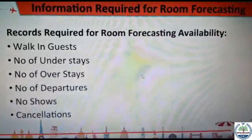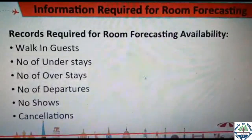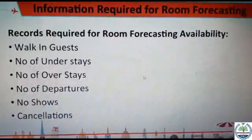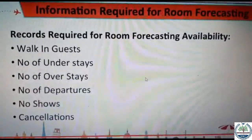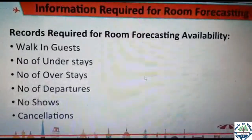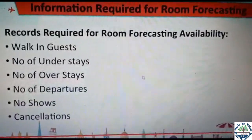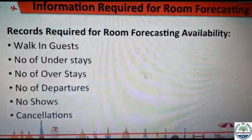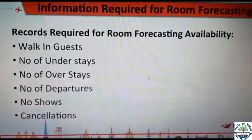Number of understays: suppose my reservation is for two days but I stay only for one day and cancel my reservation for the other day. Although I have already paid, my stay is decreased — that is an understay. Number of overstays: similarly, if my reservation is for one day but I plan to stay at the hotel for two days, that is overstaying.